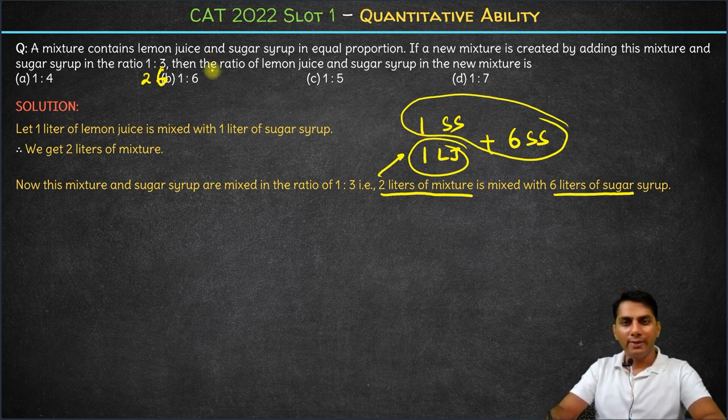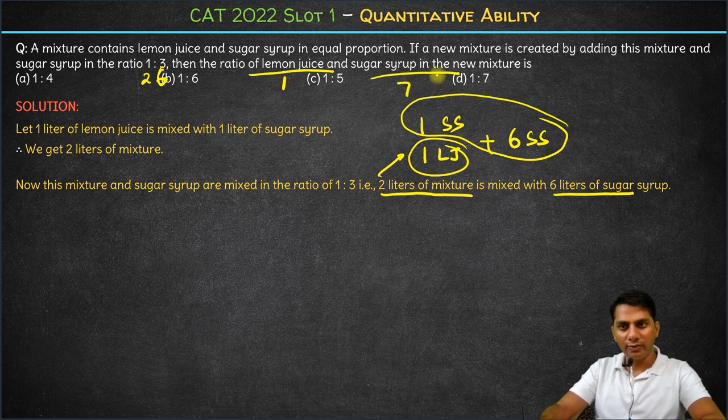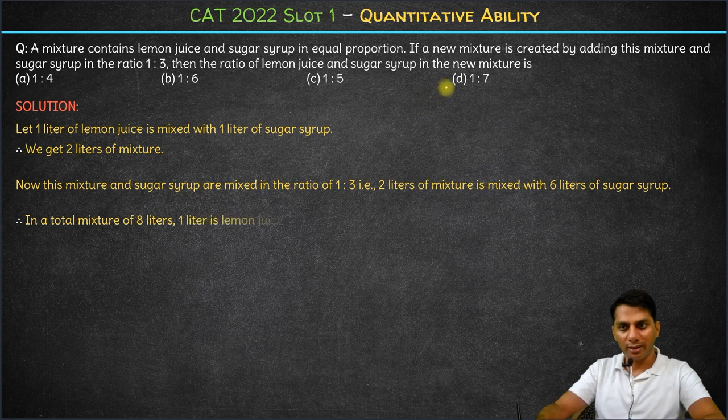At the end, we have to calculate the ratio of lemon juice and the sugar syrup in the new mixture. The final mixture will have 1 liter of lemon juice and 7 liters of sugar syrup. So the ratio of lemon juice and sugar syrup will come out to be option D, 1 is to 7.